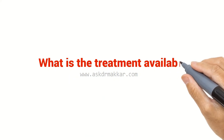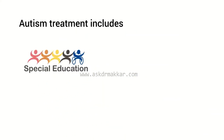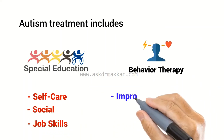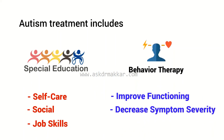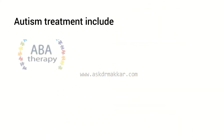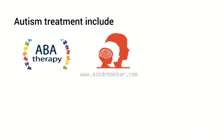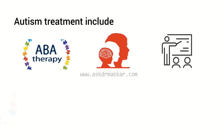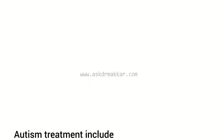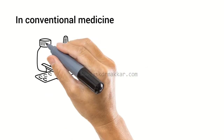What treatment is available for ASD? Autism treatment includes intensive, sustained special education programs and behavior therapy early in life, which can help children acquire self-care, social, and job skills, often improving functioning and decreasing symptom severity. Available approaches include applied behavior analysis (ABA), developmental models, structured teaching, speech and language therapy, social skills therapy, and occupational therapy.